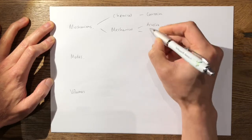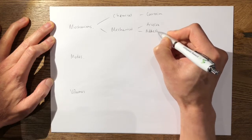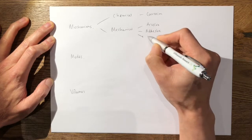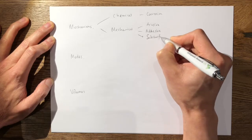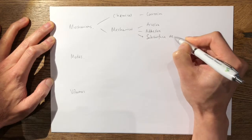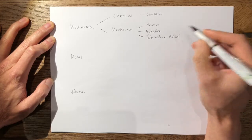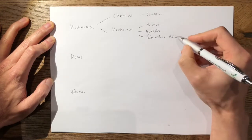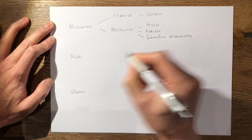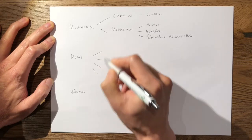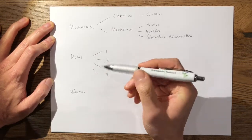And your subsurface delamination, which is your catastrophic wear where you mainly get it in tibial polyethylene. Then in your modes of wear, it's fairly simple—you've got four: one, two, three, and four.